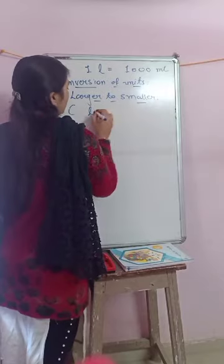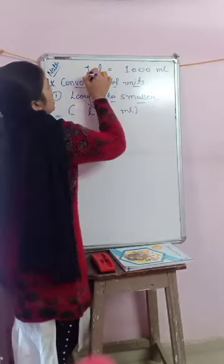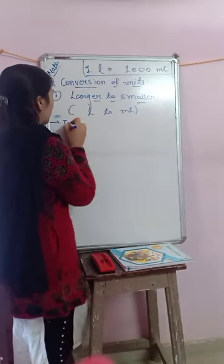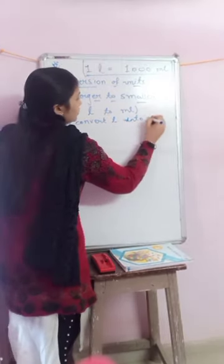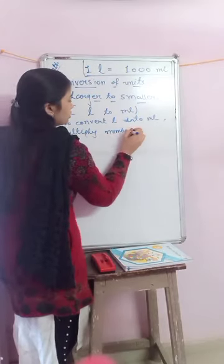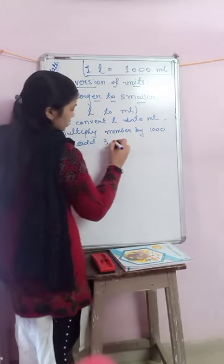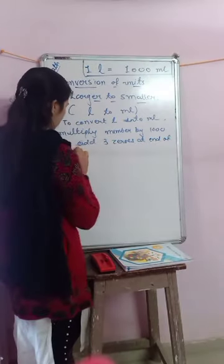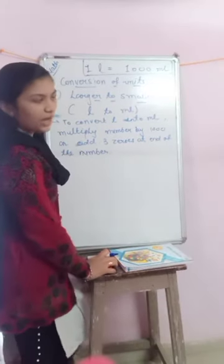We have to convert liter to milliliter. As you know, one liter equals one thousand milliliters. So to convert liter into milliliter, multiply the number by one thousand, or you can directly add three zeros at the end of the number. Please write this down in your notebook. I will send the snaps of this.